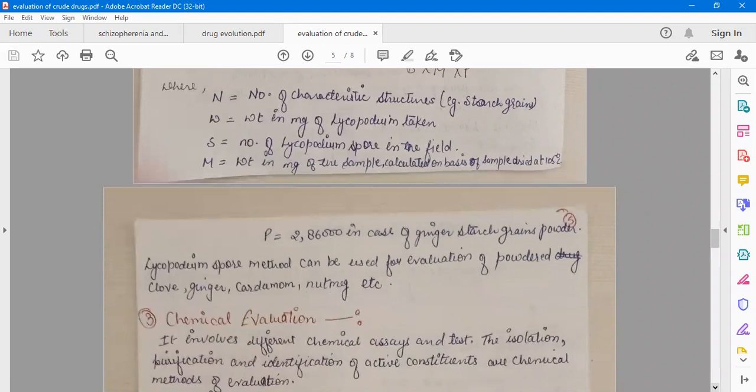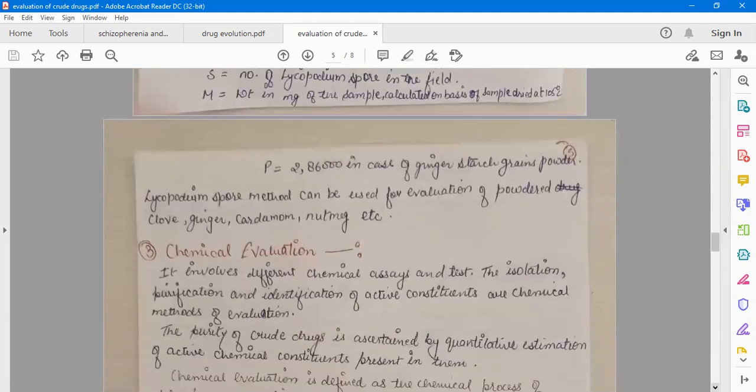Next our topic is chemical evaluation. Basically, the chemical evaluation is a method to find out the active constituent or the chemical constant present in the drug. We will discuss this method in our another video.